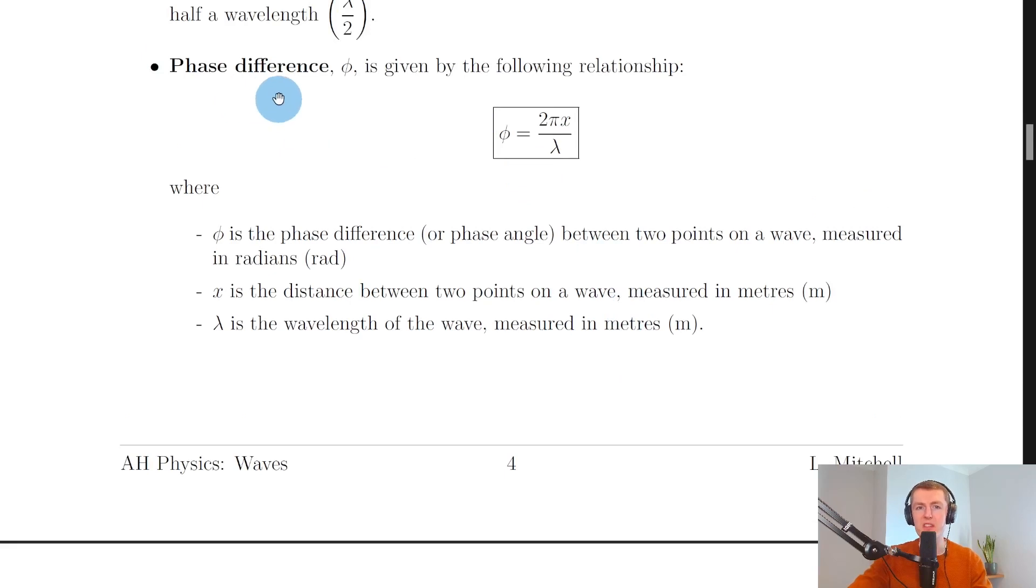Going back to the notes, phase difference which is given the symbol phi is given by the following relationship: phi equals 2 pi x over lambda. Where phi is the phase difference or phase angle between two points in a wave measured in radians, x is the distance between two points in a wave measured in meters, and lambda is the wavelength of the wave measured in meters.